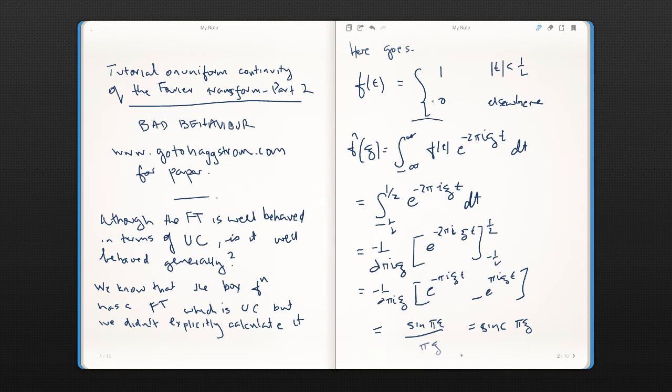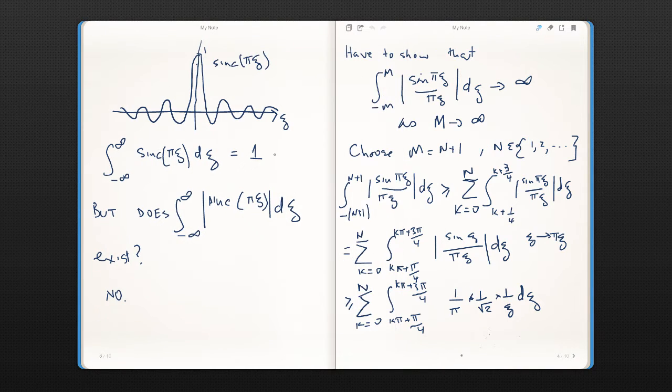This is the box function there. And here's the Fourier Transform. So it's just the simple integral of this thing here over from minus half to half. When we do that integration we get sin(πξ) over πξ which is the sinc function. So that's where it comes from. It looks like this. As you can see it's bounded by 1 and tails off.